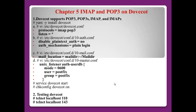Okay, let's start part 2 from chapter 5 - IMAP and POP3 on Dovecot. In the previous video, I explained how to set up Postfix. So now we are ready to use the SMTP server. Next, we need to configure Dovecot as a server to support IMAP and POP3.